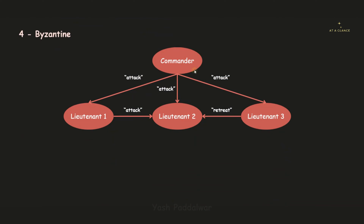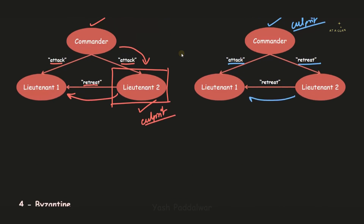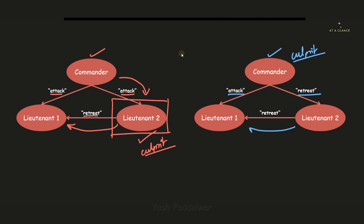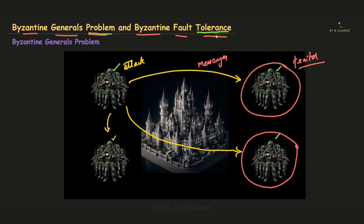Now let's consider four nodes: a commander and three lieutenants. The commander sends the message to attack to lieutenants 1, 2, and 3. Lieutenant 1 also relays attack to lieutenant 2, as said by the commander. But lieutenant 3 says retreat to lieutenant 2 — the message is modified, and lieutenant 3 is acting as the culprit. If lieutenant 2 listens to lieutenant 3, those two nodes will surrender instead of attacking, and the empire won't be captured.